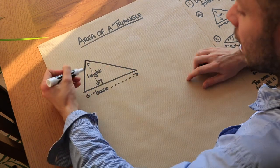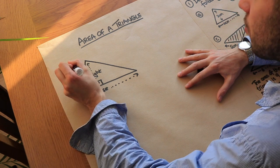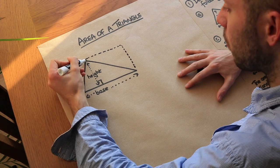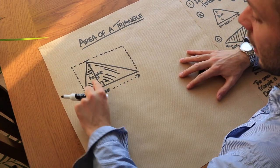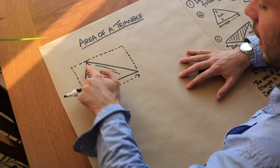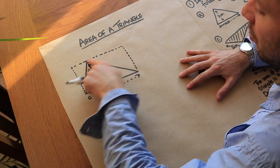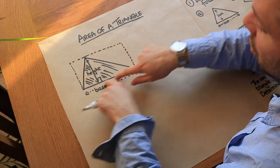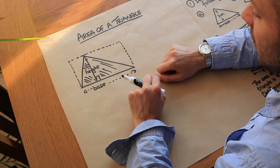Now how would we find the area of this? The trick is to turn this into a rectangle. If we draw a rectangle around the triangle and split it down the height, we can see that this triangle here has the same area as that triangle there, and this triangle here is the same as this one here. So the shaded shape must have half the area of the rectangle.